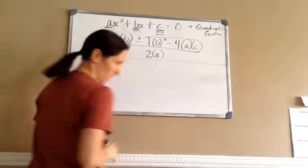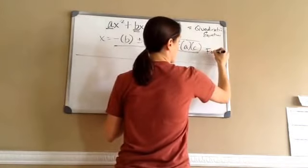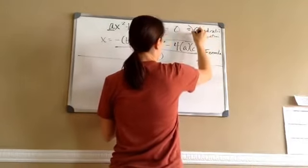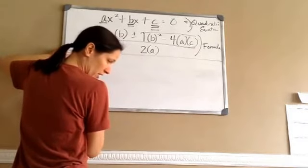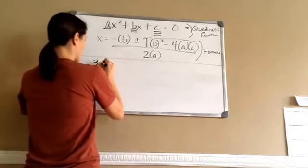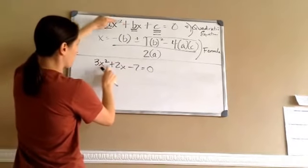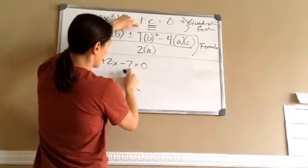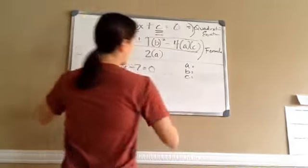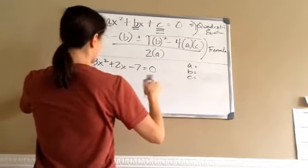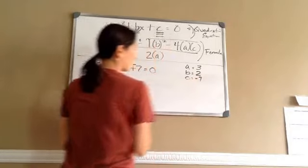Let's take the first problem. They give me the equation: 3X squared plus 2X minus 7 equals 0. We already have something X squared, something X, plus or minus something, and equals 0 — so we've already got it set up. Now let's come up with our A, B, and C. A is going to be 3, B is going to be 2, and C is going to be negative 7.